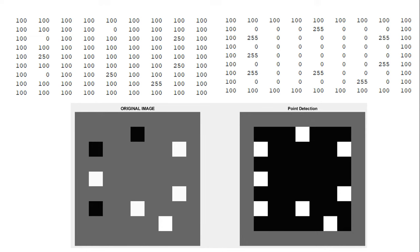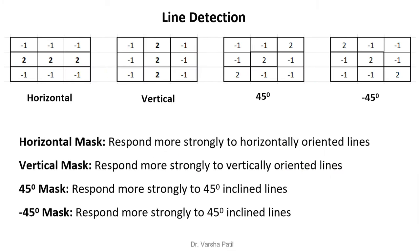Next is line detection. There are four masks: one for horizontal line detection, one for vertical line detection, one for plus 45 degrees, and one for minus 45 degrees. The horizontal mask responds more strongly to horizontally oriented lines, the vertical mask to vertically oriented lines, and the 45 and minus 45 masks respond to lines inclined at those respective angles.